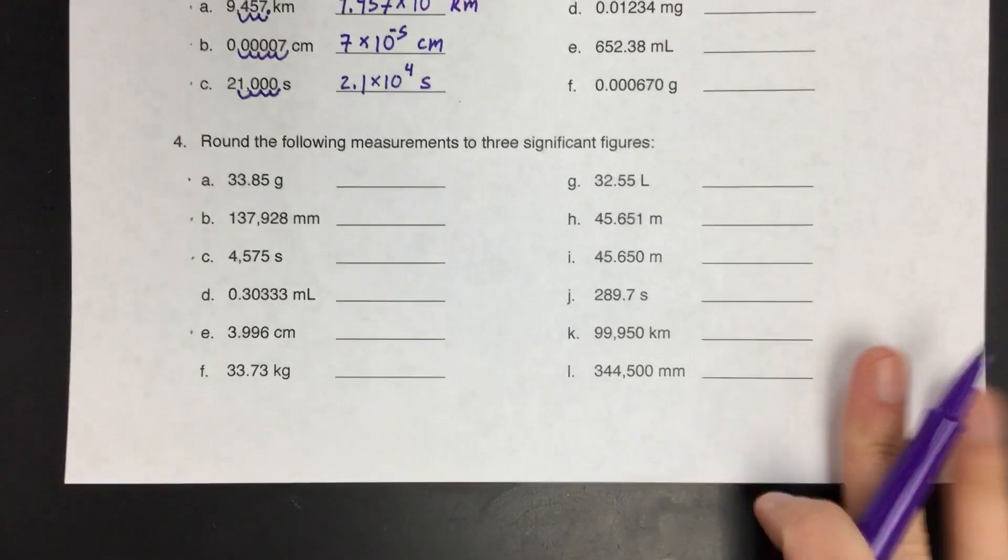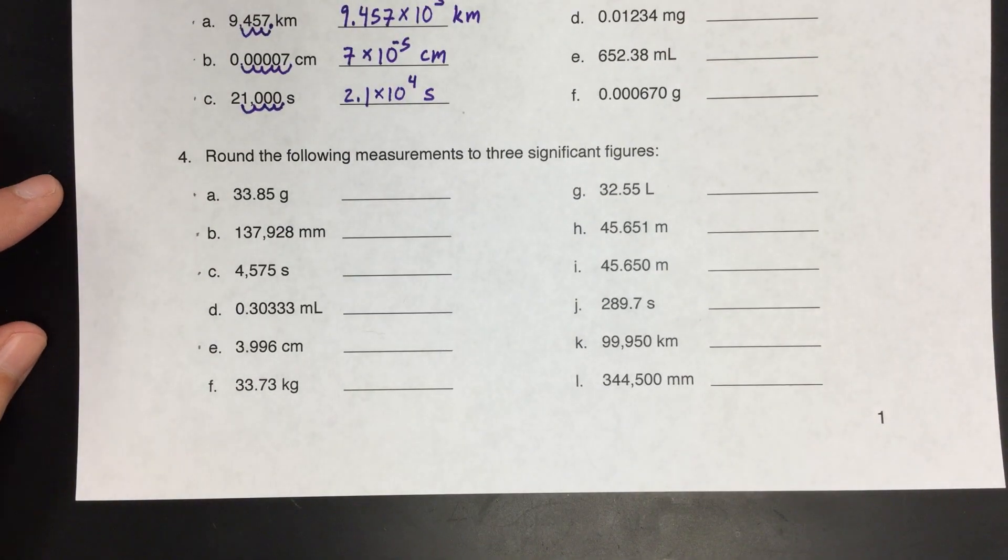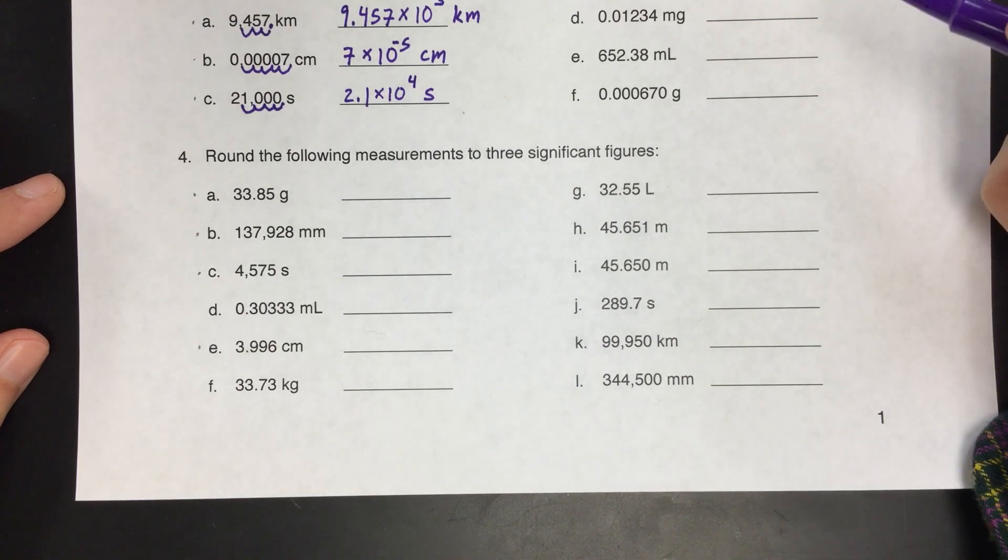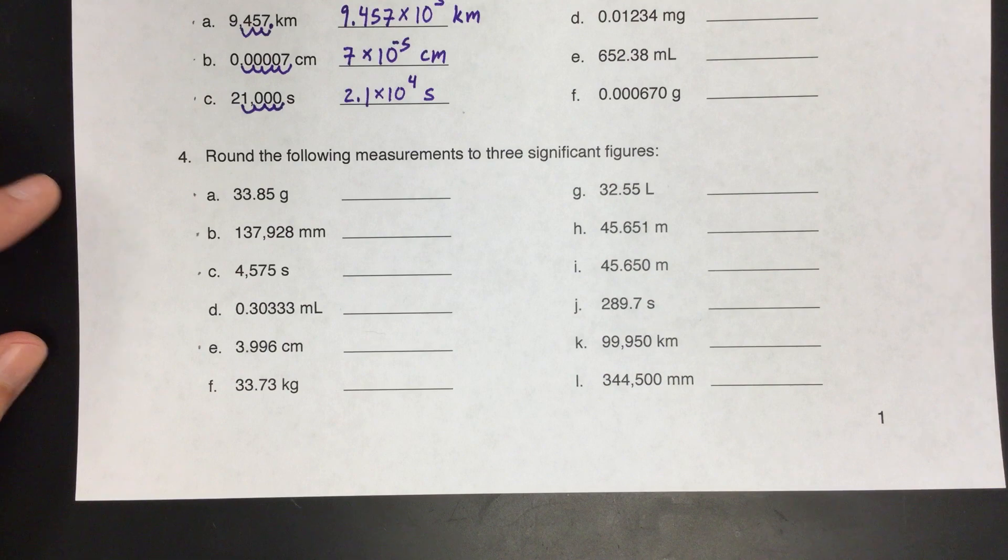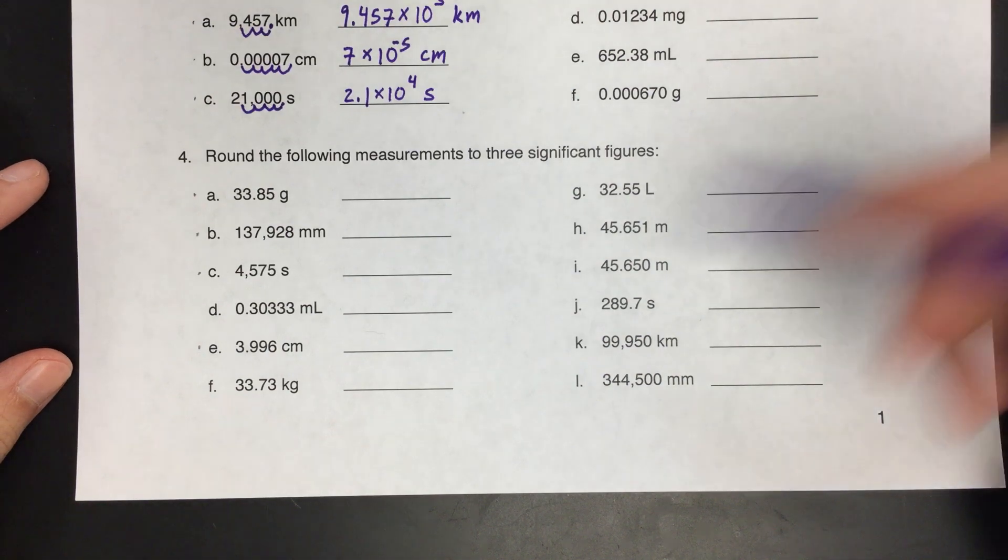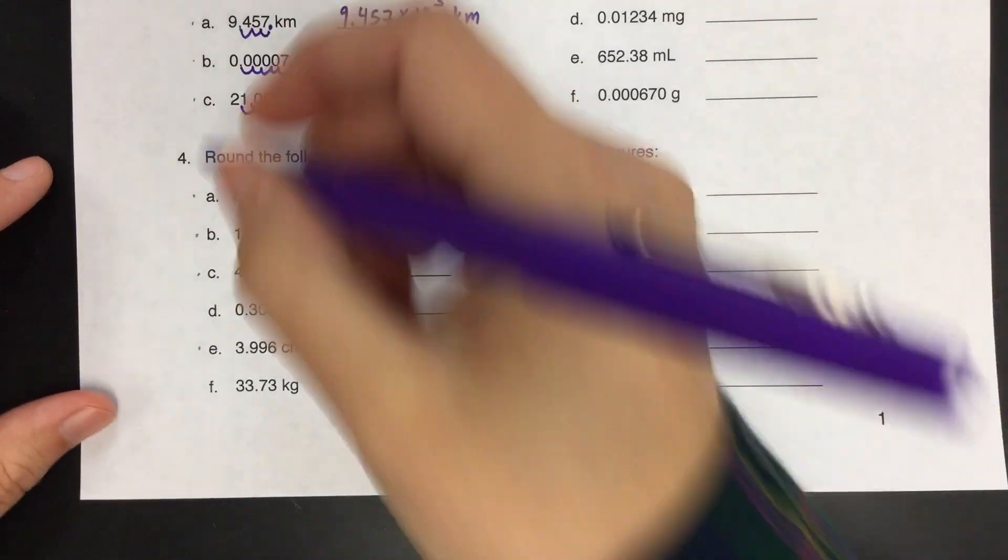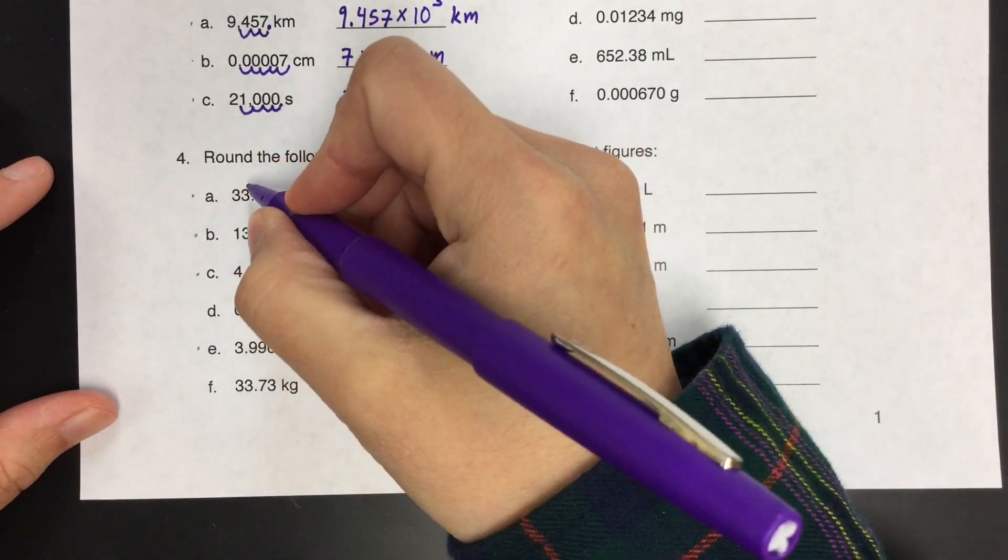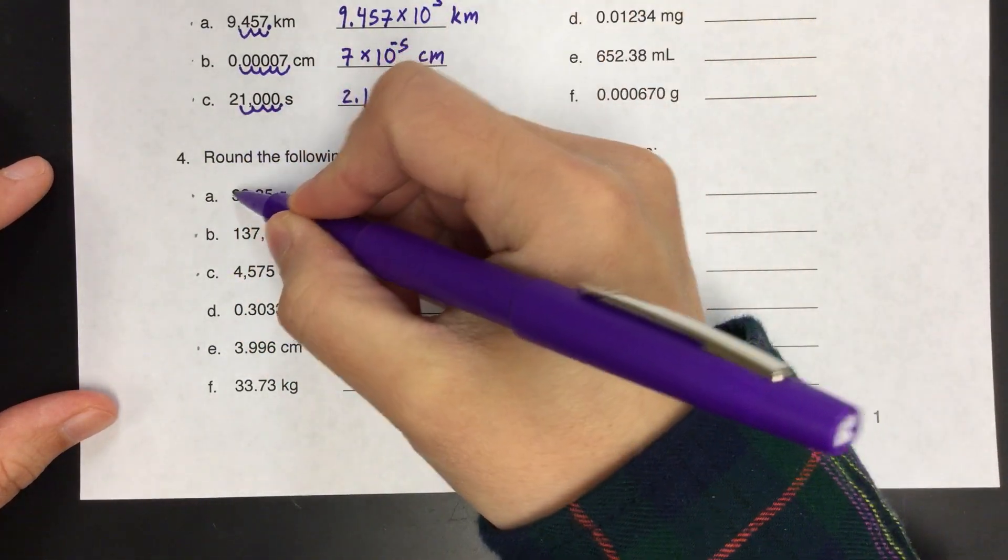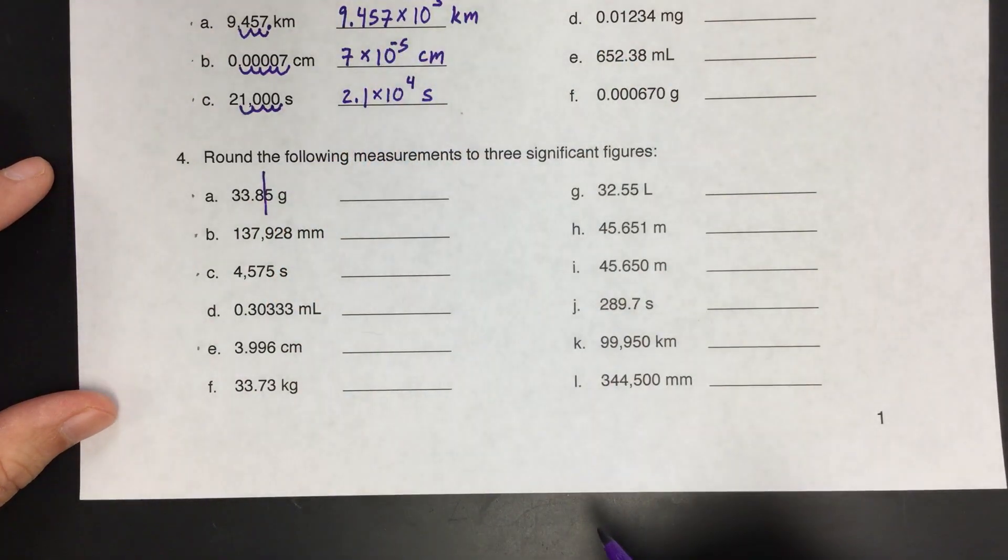So if we're looking at number four, we're just going to do a few of these. So 4a, we want to round these to three significant figures. So the first thing that I like to do when I know how many digits I need to round to is just literally draw a line where I need to cut off the number. So for example, for 4a, if I want three significant figures, one, two, three, I need to cut this off right there.